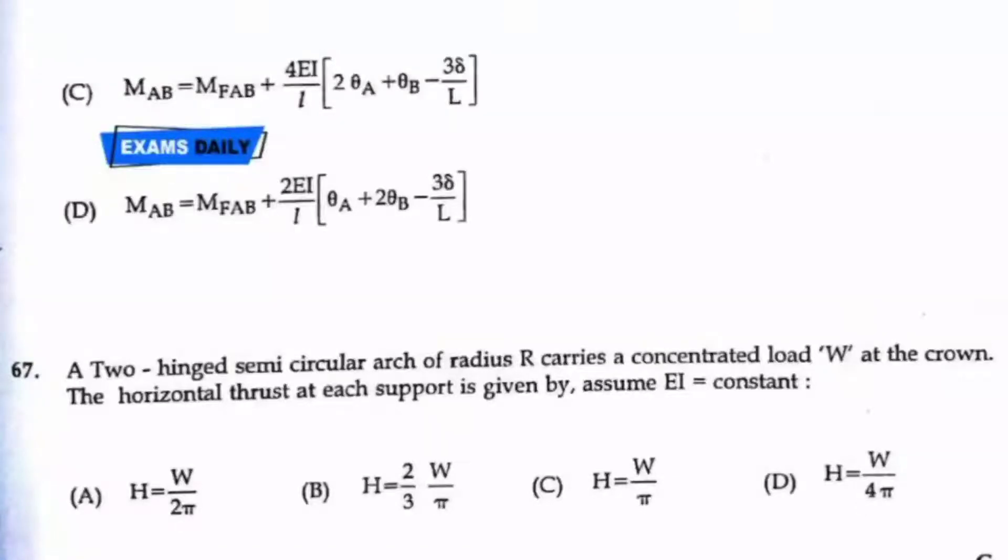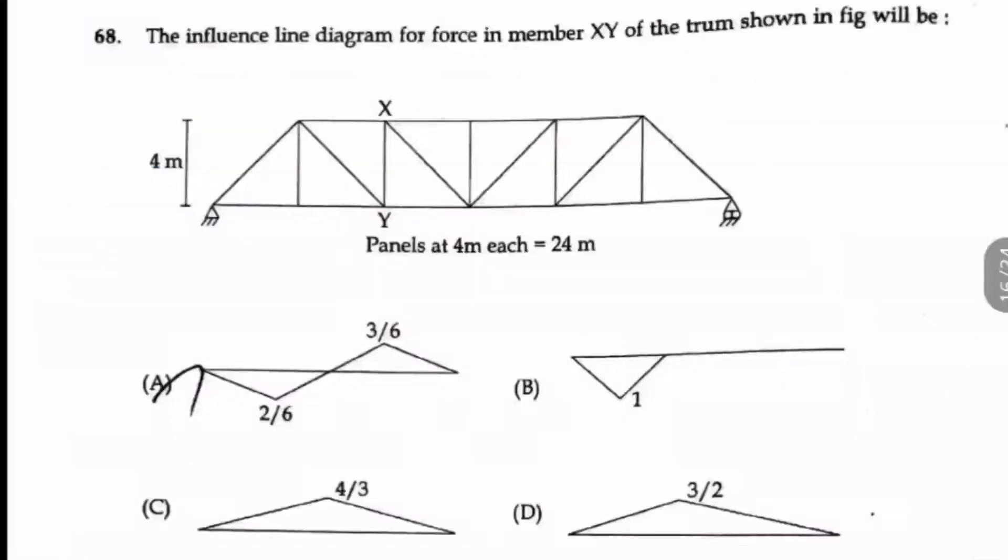Question number 68: The influence line diagram for force in member XY of the truss shown in figure will be what? They have asked for the member XY which is of height 4 meters, so that alone we have to see. If you see the influence line diagram, option A will be the right answer.